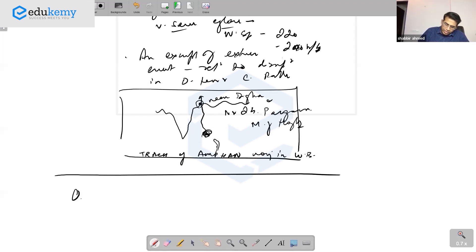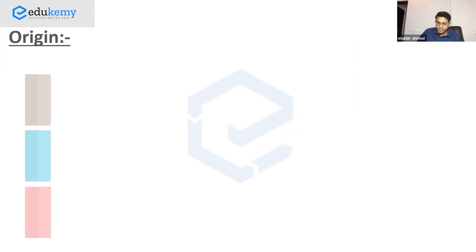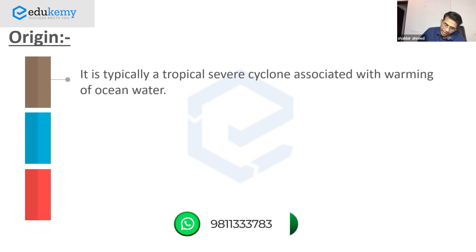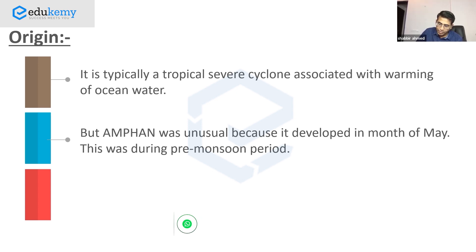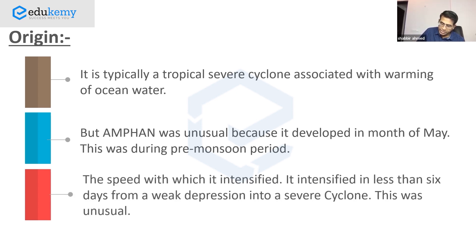Remember that list: origin. It's typically a tropical cyclone associated with warming of ocean or sea waters. But Amphan was unusual - it developed during the month of May, very similar to Fani in 2019 which was also in May, during pre-monsoon. This is very unusual. The speed with which it intensified - from a weak depression into a very severe cyclone in less than six days.